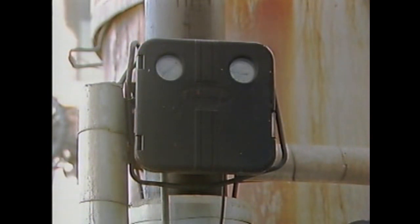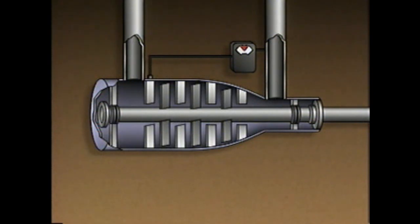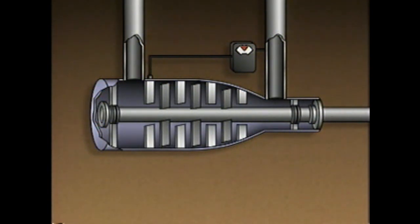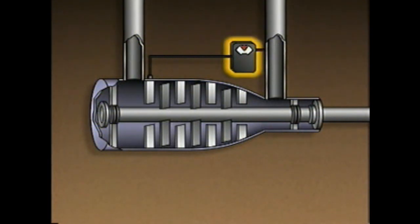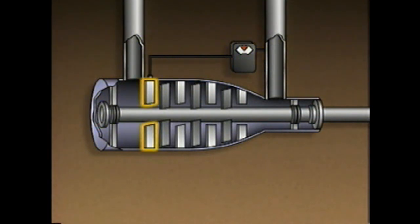Compressor instrumentation and control devices also maintain the gas discharge pressure. For example, this simplified illustration shows an axial compressor with one type of control system that maintains a constant discharge pressure. The main components of this control system are a pressure controller and inlet guide vanes.